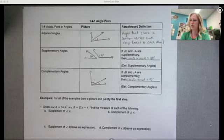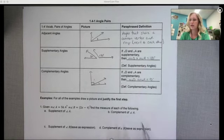This is the video for 1-4-1. We're going to be talking about some different pairs of angles today. So these three vocabulary words are different types of angles.